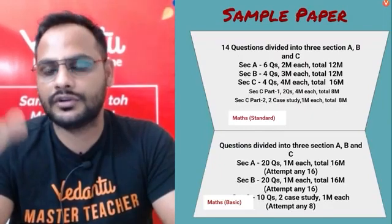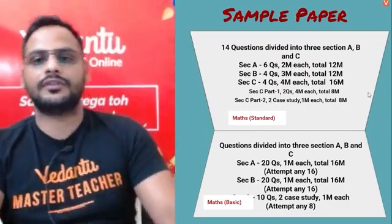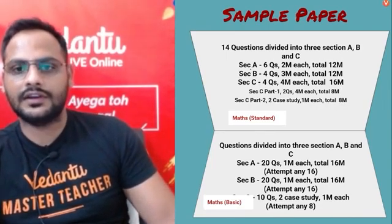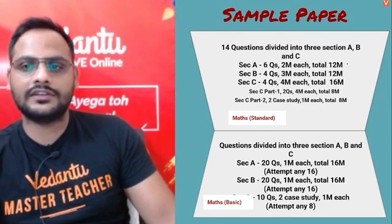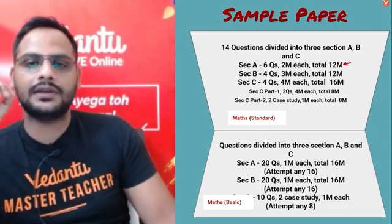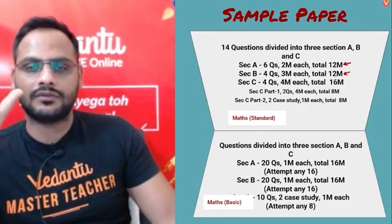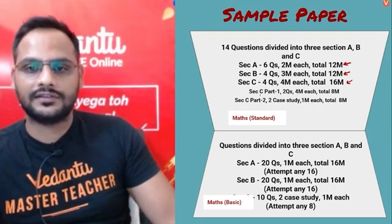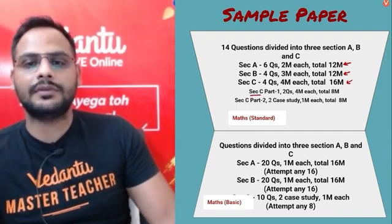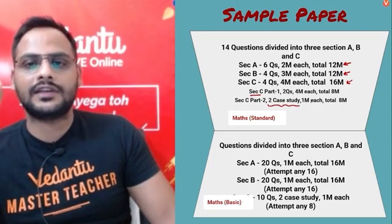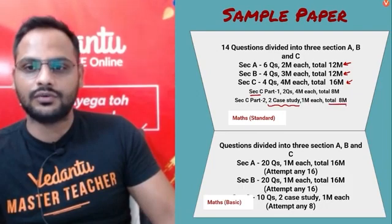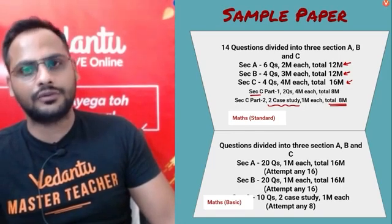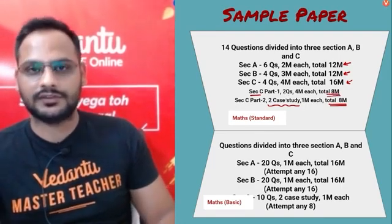The paper pattern for standard maths has three sections: Section A, B, and C. Section A has six questions, two marks each — total 12 marks. Section B has four questions, three marks each — total 12 marks. Section C has four questions of four marks each, and within Section C there are two case study questions, each having four questions of one mark each, plus two questions of four marks each.